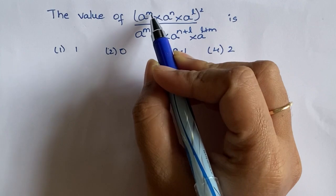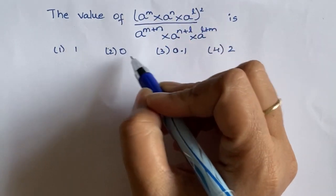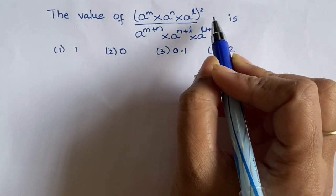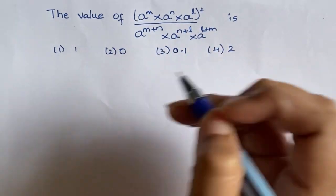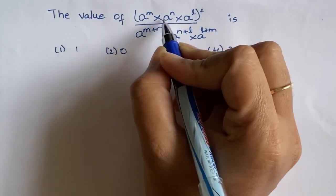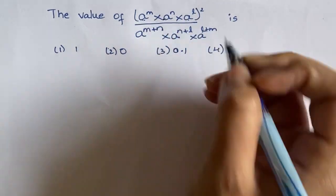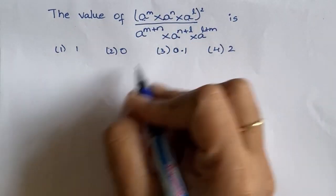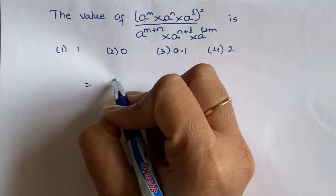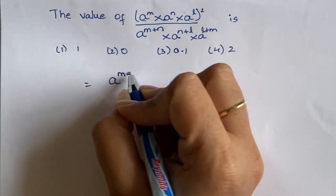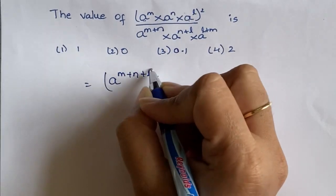The value of a to the power m, into a to the power n, into a to the power l, whole square. We have to apply formulas from the law of exponents. Since the bases are equal, we add the powers, giving a to the power m plus n plus l, whole square.